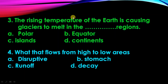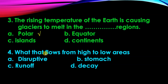Third: the rising temperature of the earth is causing glaciers to melt in the dash region — answer will be polar region. Fourth: what flows from high to low area — answer will be runoff.